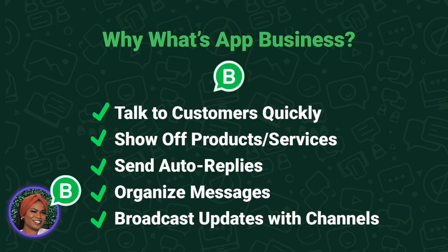Number three, you're able to send auto replies, which means you can set up automated greetings or quick replies so that none of your customers' messages go unanswered. Number four, you're able to organize messages — you can use labels, think of them as folders for chats, to keep everything neat and easy to find. Number five, broadcast updates with channels. You're able to share promotions or news with a whole bunch of your followers all at one time, almost like sending out a mini newsletter — and it's direct to their phone.